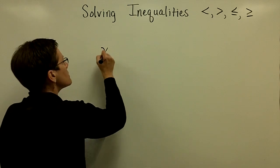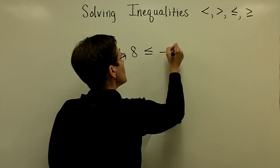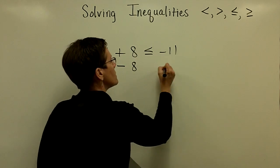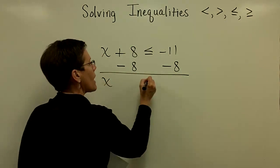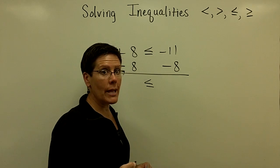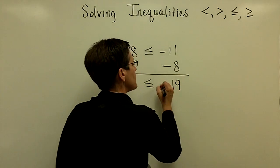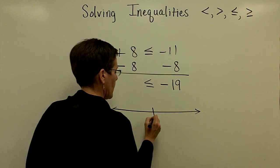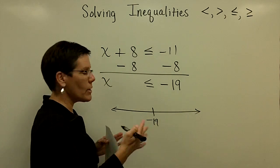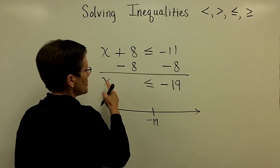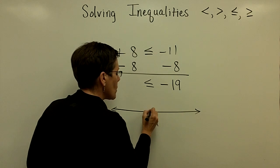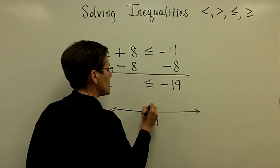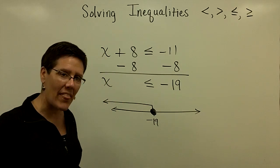So let's take x plus 8 is less than or equal to negative 11. Let's solve for x by getting rid of the positive 8, so I will subtract 8 from both sides of this inequality, and I'll have x is less than or equal to — I'm adding those two negative numbers. The sum of their absolute values is 19, I put that common sign with them. When I want to graph something like this on a number line, I'll stick negative 19 on the line, and I'm going to color in the circle this time, because x is equal to negative 19 as well as any values less than that.